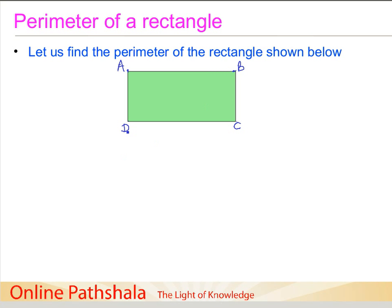Now, as we learned earlier, the perimeter is the sum of lengths of all the sides. So the perimeter can be written as the sum of line segments AB, line segment BC, line segment CD, and line segment DA.